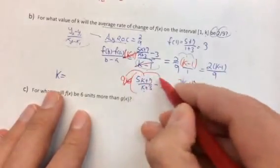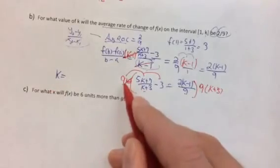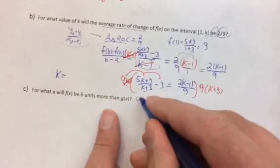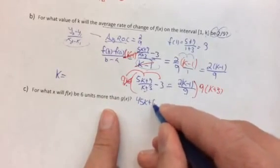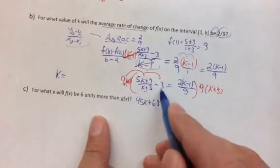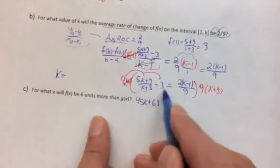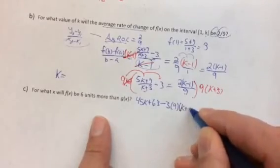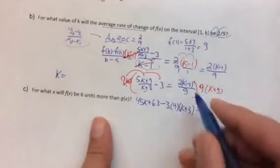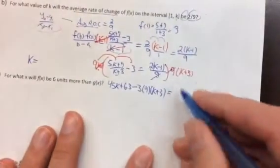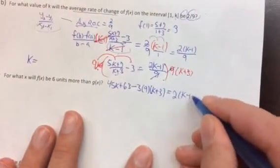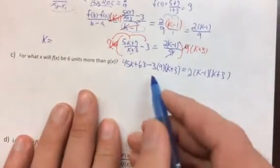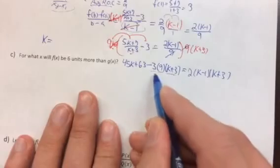When distributing, multiplying by k plus 3 and dividing by k plus 3 cancels out, leaving 9 times 5k plus 7. For the second term, 9 times k plus 3 times negative 3 — nothing cancels — so it's negative 3 times 9 times k plus 3. On the right side, dividing by 9 cancels out, giving us 2 times k minus 1 times k plus 3.